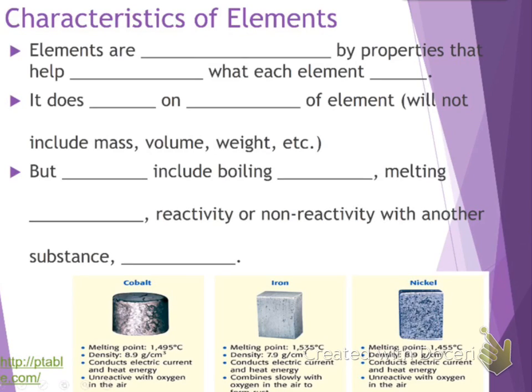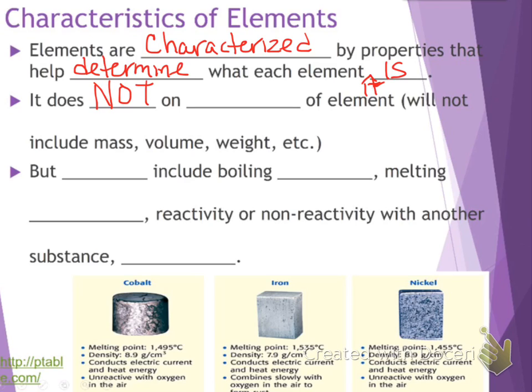Well, actually, I'm going to talk about all of them. So we're going to talk about the characteristics of elements and how we tell them apart. And elements are characterized by properties that help determine what each element is. And that's in the wrong spot. On this next sentence, I have messed it all up, so be prepared for that. It does not depend on the amount of the element, okay?